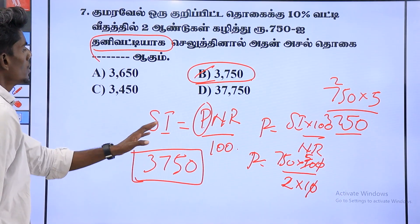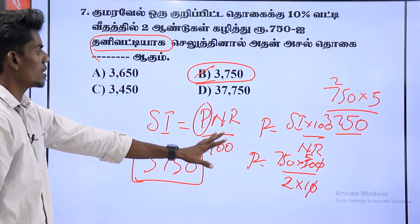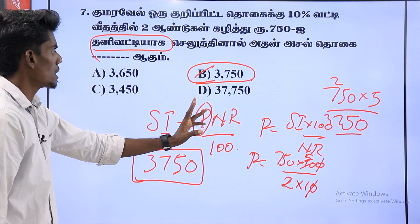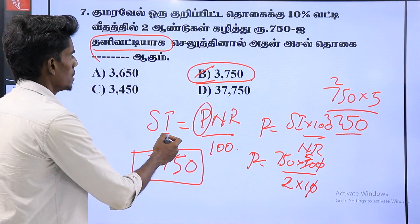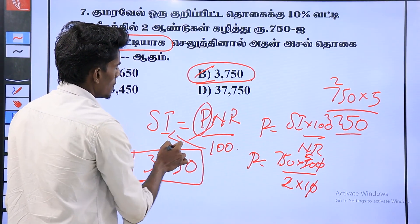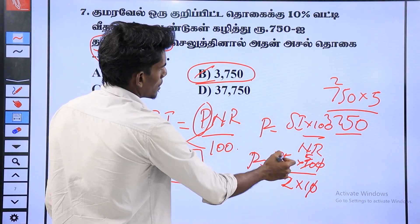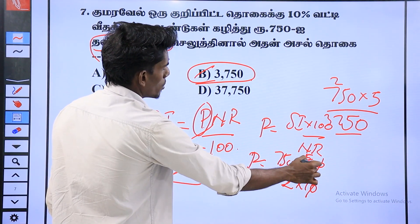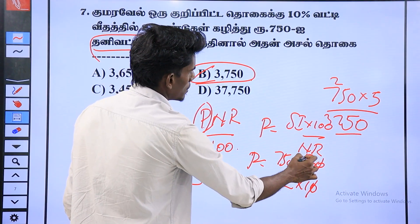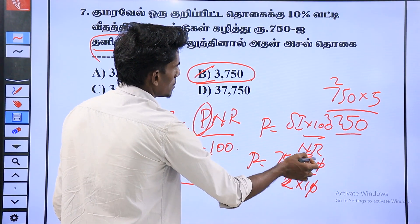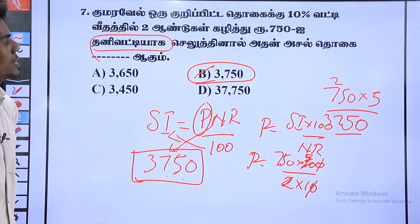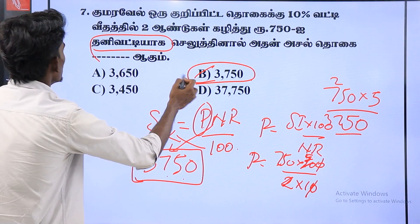Simple interest is equal to P and R by 100. How do we call simple interest? P is equal to SI into 100 by NR. SI into 100 is 70, 75 into 100 by 2 into 10. If we call it 0 to 0, we call it 5. If we call it 5, 3, 7, 50. Then the answer is 3,750. Option B is the answer.